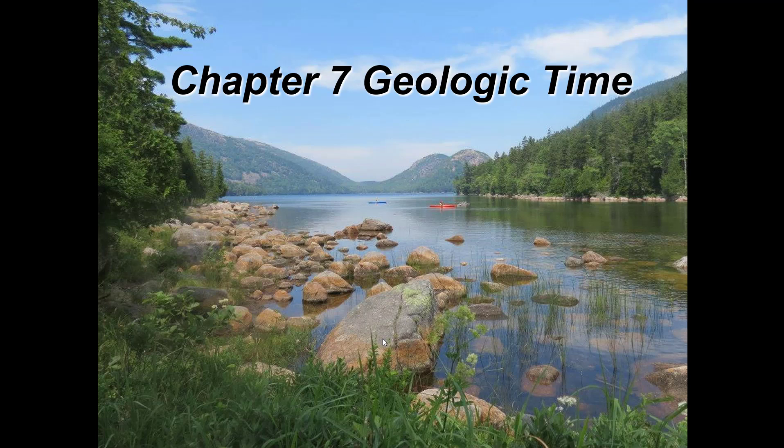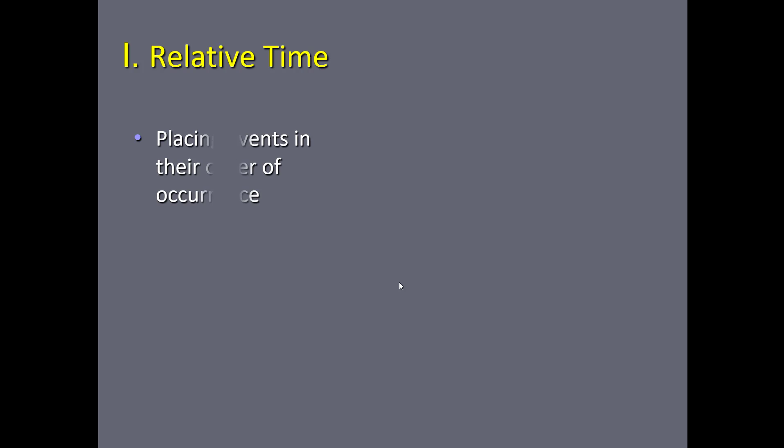Geologic time is a way to look at all of the different things that have happened in a landscape at one period of time and try to unravel it, almost like a big giant puzzle. There are two main parts to this chapter on geologic time, and the first is called relative time — the process of placing events in the order of their occurrence.